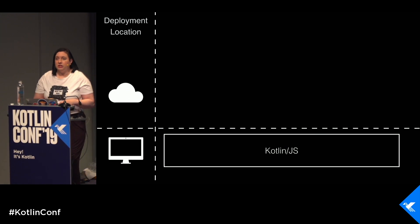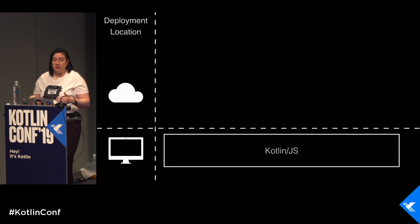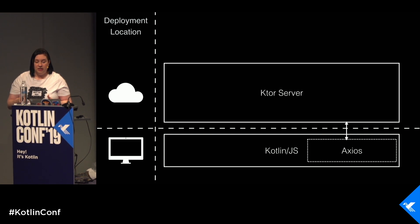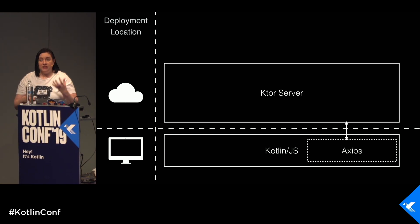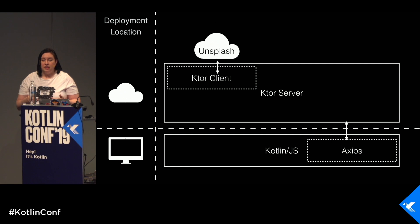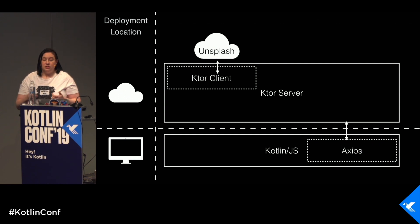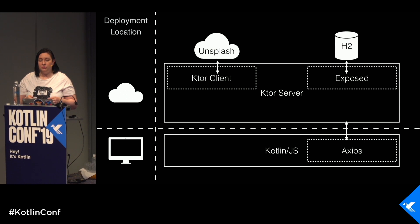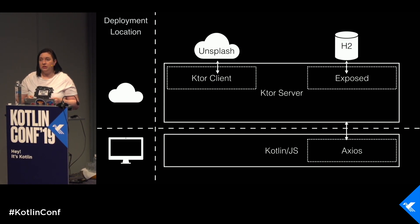Let's have a look at how all those moving parts fit together. Starting from the bottom, we have a web app written in Kotlin.js, and it uses the Axios library to connect to some REST services on a Ktor server via HTTP. That Ktor server connects to the Unsplash API, which provides high-quality but royalty-free images, using a Ktor client over HTTP. The Ktor server also saves some user data into an H2 database through the Exposed library.